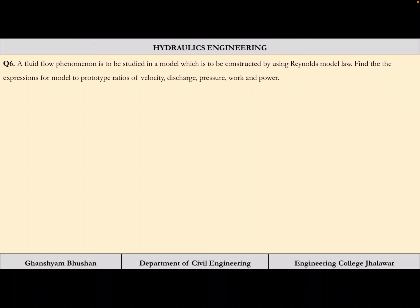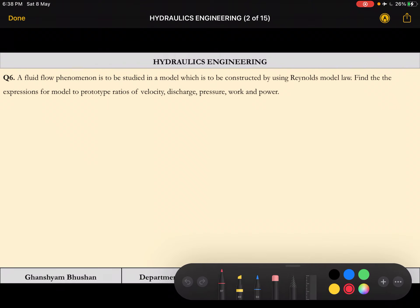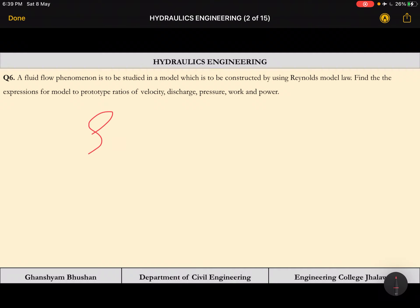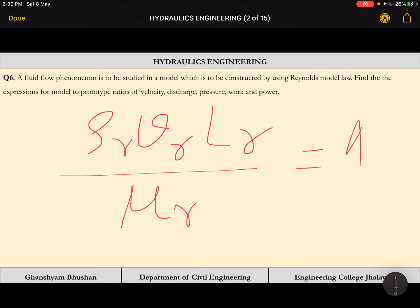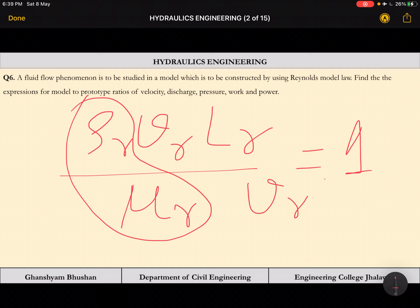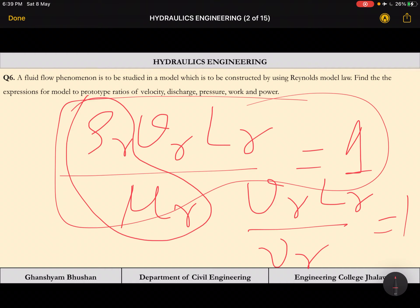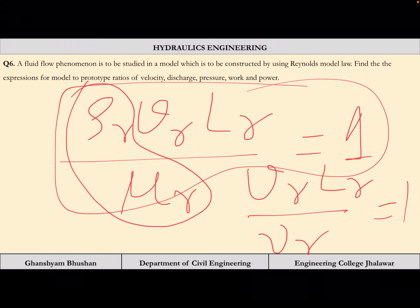We have to find the expression for model-to-prototype ratios of velocity, discharge, pressure, work, and power — that means we have to find Vr, Qr, Pr, Wr, and Power ratio. The basic equation of Reynolds law is: rho_r * Vr * Lr / mu_r = 1, or equivalently Vr * Lr / nu_r = 1, where nu is kinematic viscosity.